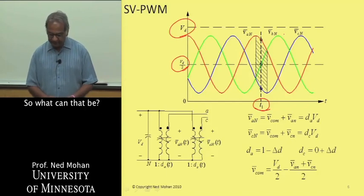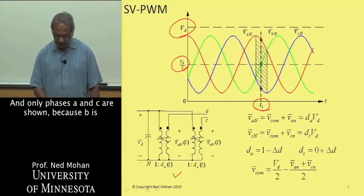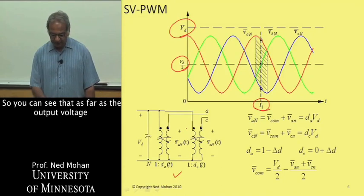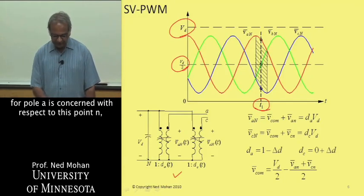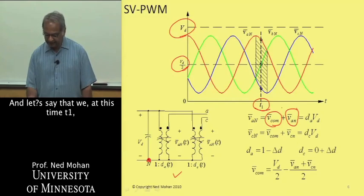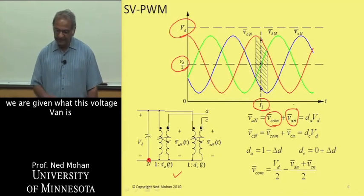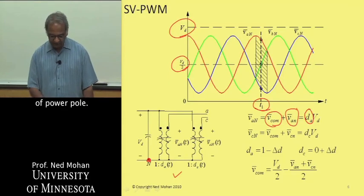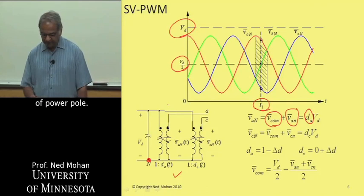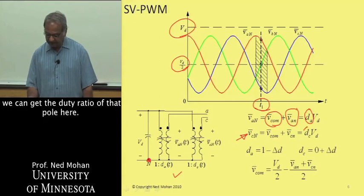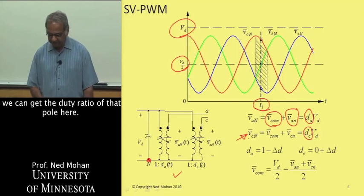Let's look at this circuit here, and only phases A and C are shown because B is in the middle and it doesn't really matter. You can see that as far as the output voltage for pole A is concerned with respect to this point N, it's this common mode voltage which we need to determine, and at this time T1 we are given what this voltage VAN is that we need to synthesize, and the sum of these two would determine the duty ratio of this power pole. Similarly for pole C, we can get the duty ratio of that pole.